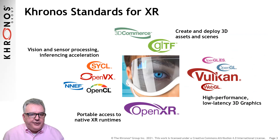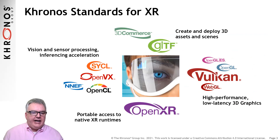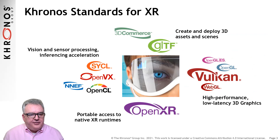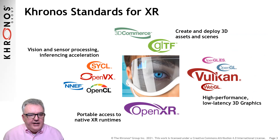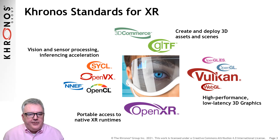Here are some of the Kronos standards that are most relevant to augmented and virtual reality. We have 3D APIs, including Vulkan and WebGL for rendering both natively and in the web. 3D asset formats, including GLTF and the new 3D Commerce Working Group that is ramping up the use of 3D for e-commerce to industrial scale. We have APIs and languages for parallel computation, including vision processing and inferencing. And last but not least, we have the OpenXR API standard for portable access to augmented and virtual reality devices and runtimes.